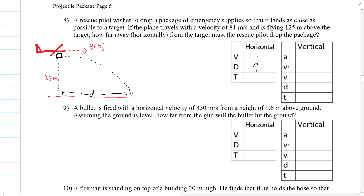The horizontal speed is 81 meters per second. The acceleration due to gravity is 9.8 meters per second squared downward. The initial vertical speed is zero — I keep emphasizing this every time and underlining it, so you might want to do that too.